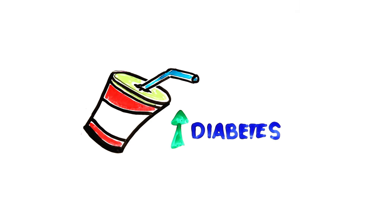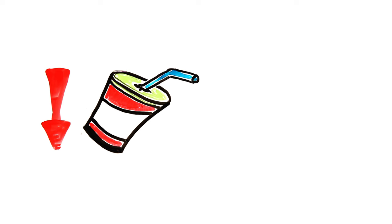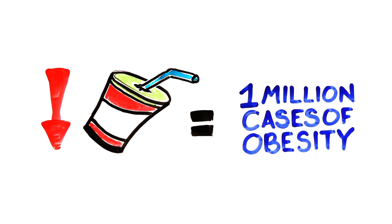The disruption of insulin also increases the risk of diabetes. Overall, research suggests that reducing the amount of sugar in drinks could prevent 1 million cases of obesity.